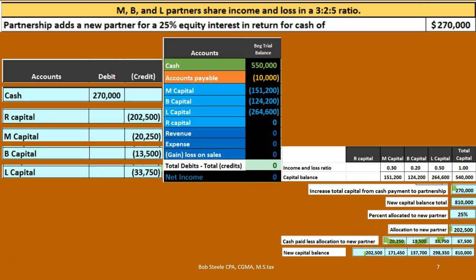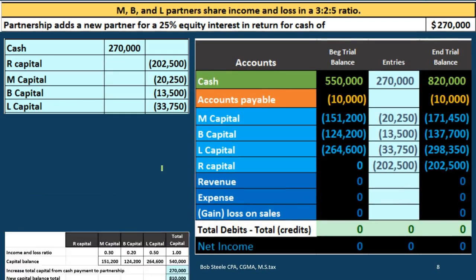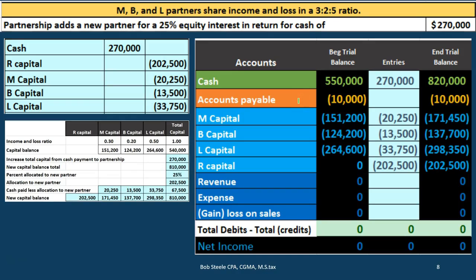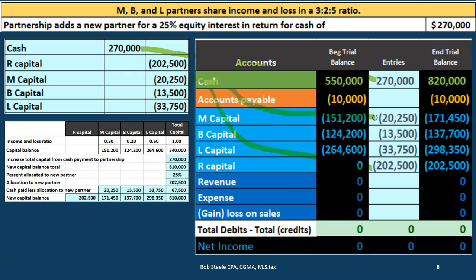Here's that same journal entry and worksheet — let's see if it does what we expect when posted. We expect R, M, B, and L's capital accounts to be $202,500, $171,450, $137,700, and $298,350 respectively. Cash goes from $550,000 up to $820,000. R's capital account goes from zero up by $202,500. M's capital account goes up in the credit direction by $20,250, from $151,200 to $171,450.